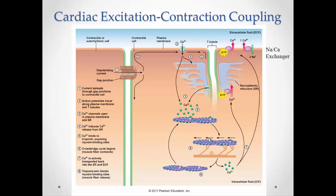Now let's look at cardiac excitation-contraction coupling — basically, how does a cardiac muscle contract? This is very similar to skeletal muscle, but the difference is how we get it going, and that's through those gap junctions. Assuming there's already an action potential in one cell, that action potential travels right through the gap junction to give the next cell an action potential. The depolarizing current passes through the gap junction, travels along the cell membrane and down the T-tubules, opening up calcium channels in the cell membrane. Calcium concentrated outside the cell diffuses in, and that triggers the release of calcium from the sarcoplasmic reticulum.